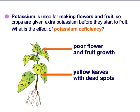Potassium is used for making flowers and fruits, so a deficiency means we get poor flowers and poor fruit growth. At the top of the plant there may be a lack of fruit and a lack of flowers. However, the secondary effect could be yellow leaves with dead spots — you can see areas where the leaf is no longer living. So we've got yellow leaves, dead spots, and a lack of fruit and flowers.